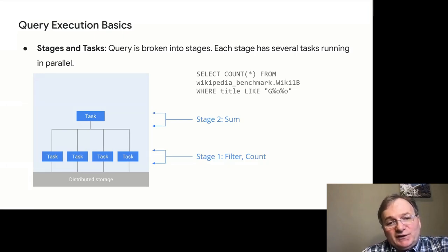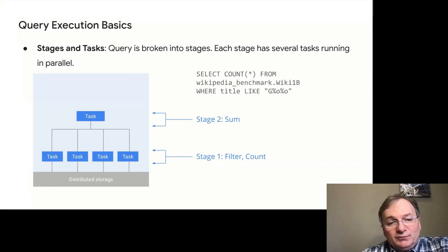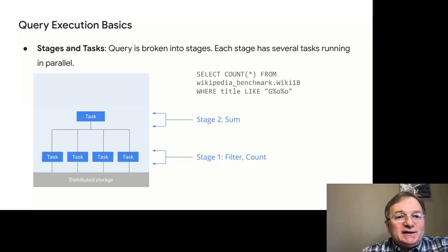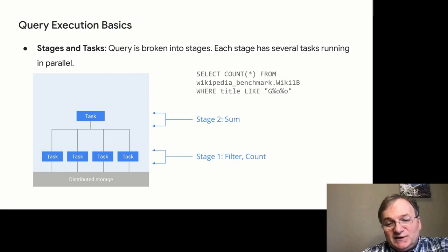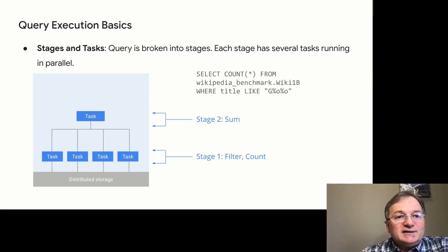The number of stages in a query is not fixed and can sometimes change depending on data distribution. The rule of thumb is that each aggregation probably requires one stage, and each join adds one or two stages. In this example, a simple query requires two stages: in the first stage we do table scan and filtering, then local aggregation; and the second stage computes the final count.